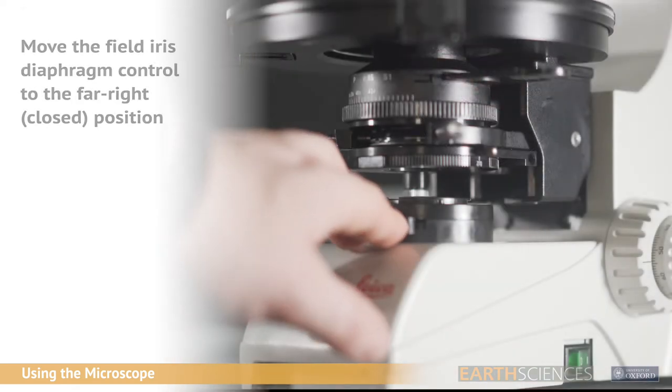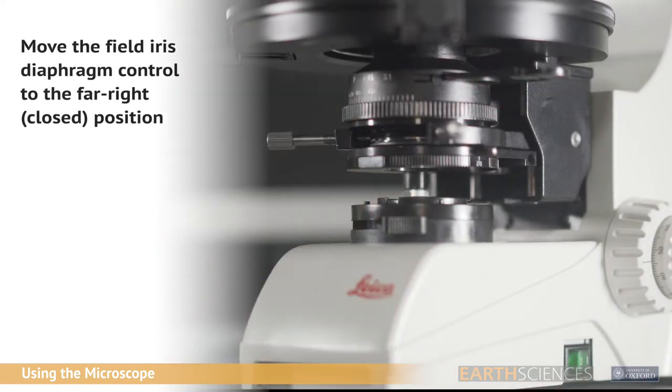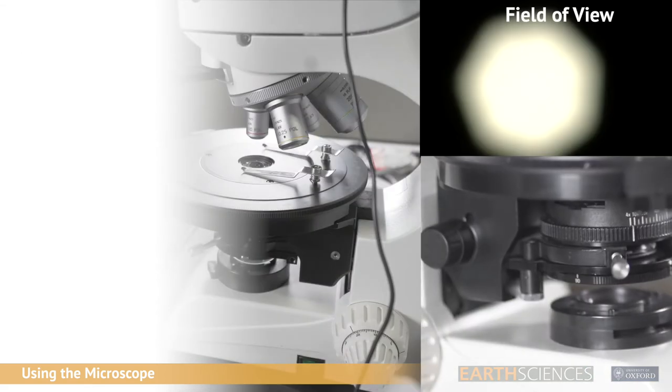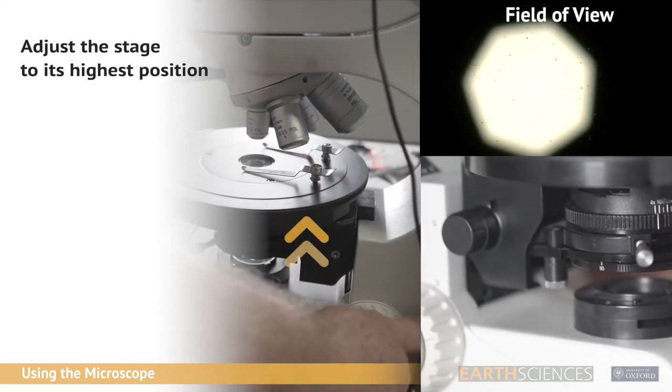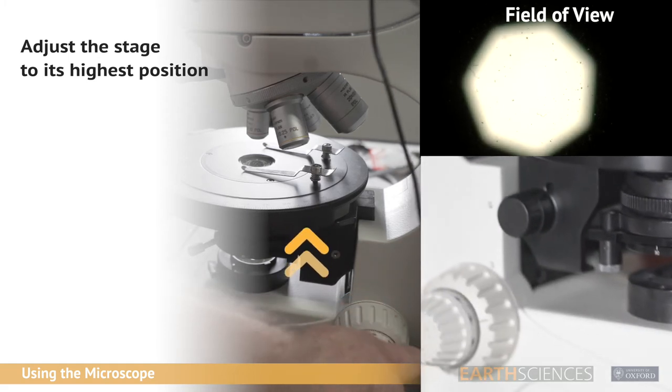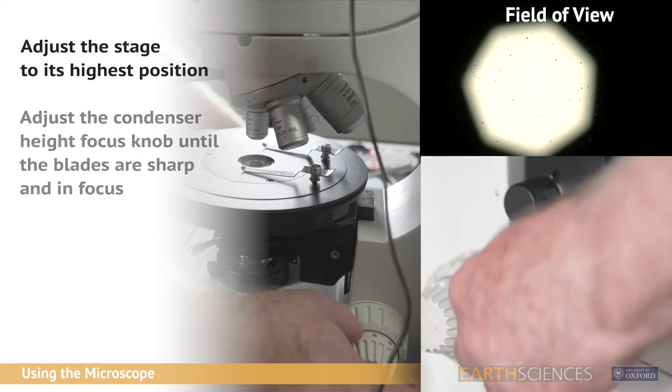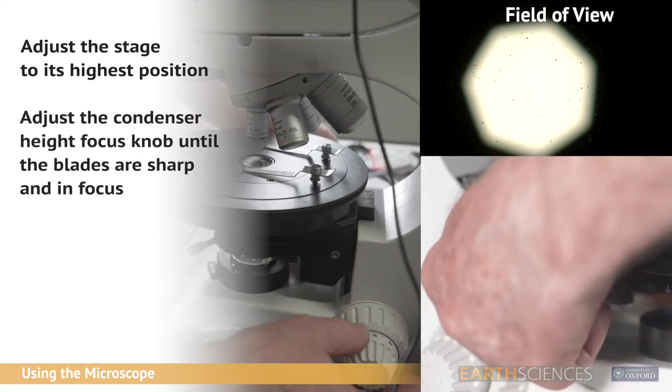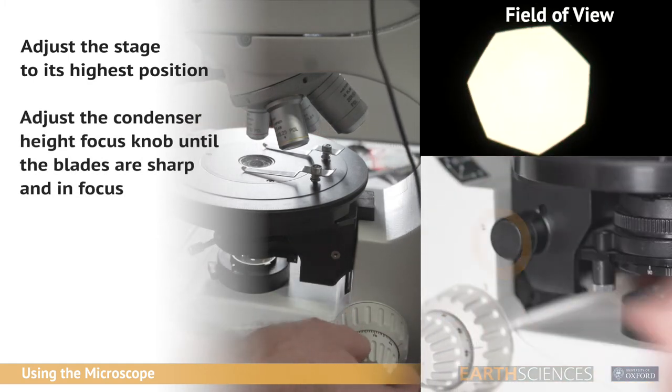Move the field iris diaphragm control across to the far right position. Use the coarse focus adjustment to adjust the stage height as high as possible. Adjust the condenser height focus knob until the aperture diaphragm blades are sharp and in focus.